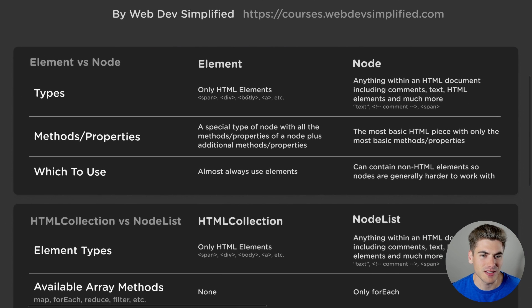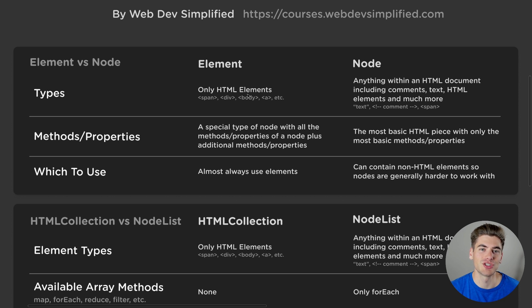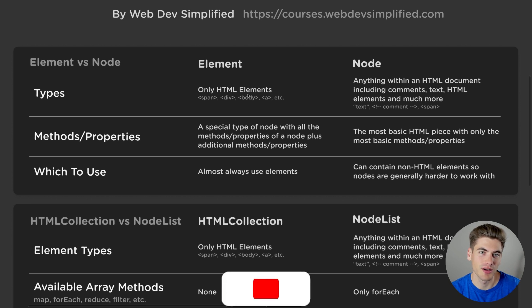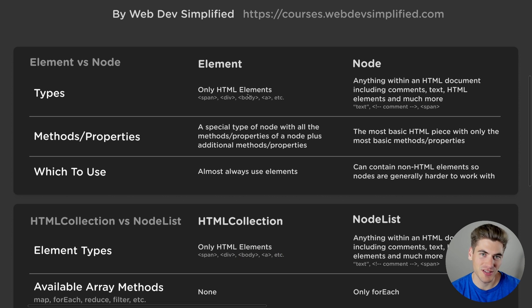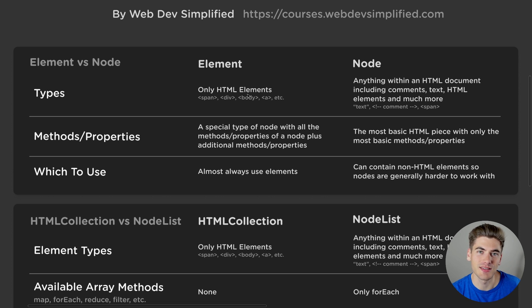An element and a node are very similar in that a node represents anything inside of an HTML document. So all your elements — your spans, your divs, your body tags, and so on — those are all nodes. Every single comment in your HTML is a node. Every single piece of text is its own node. A node is essentially every single small broken-down piece of your HTML document.